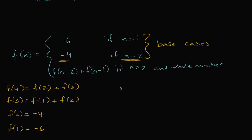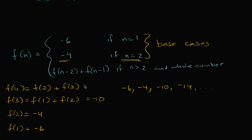Now we can fill in the values. The sequence is: negative six, then negative four. The third term is the sum of the previous two: negative six plus negative four is negative ten. And the fourth term is f of two plus f of three: negative four plus negative ten is negative fourteen. And we could keep going on and on like that.